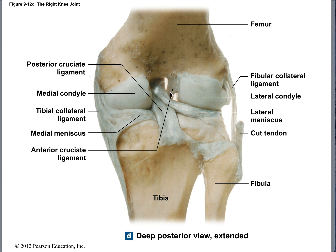Looking from the backside: this one goes to the front — anterior — and this one comes to the back — posterior. Here is the medial meniscus and lateral meniscus, and our collateral ligaments. So you notice I've slowed down on the knee.